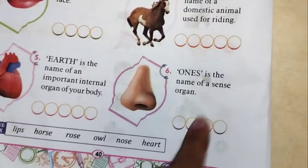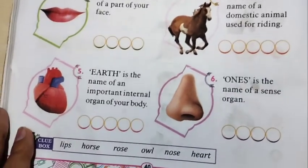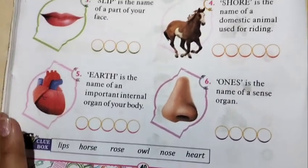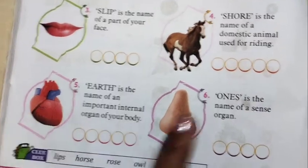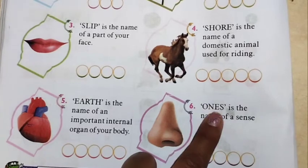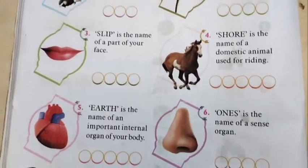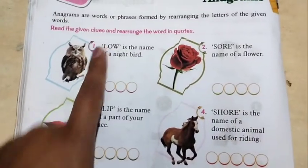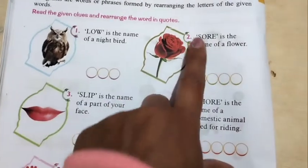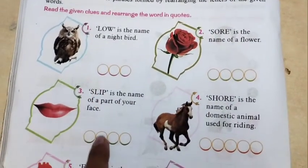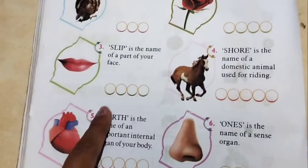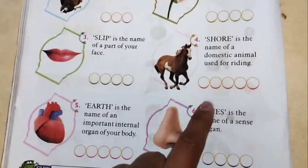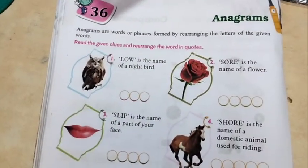ONCE is the name of a sense organ. We all know we have five sense organs — eyes, ears, nose, tongue, and skin. The sense organ whose name uses O-N-C-E is NOSE. So: LOW→OWL, SORE→ROSE, SLIP→LIPS, SHORE→HORSE, EARTH→HEART, and ONCE→NOSE. These are the two chapters which you have to do in your book today.